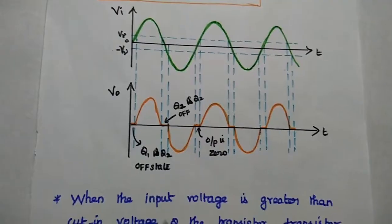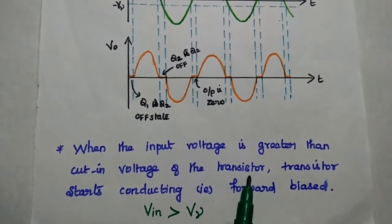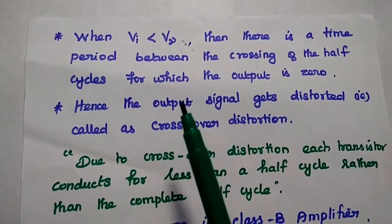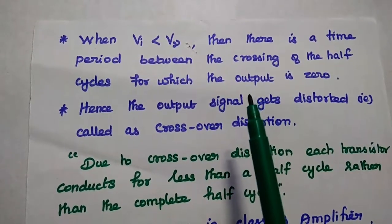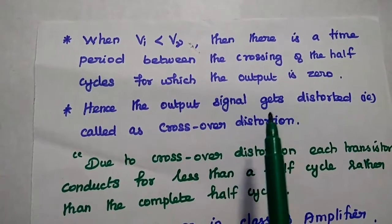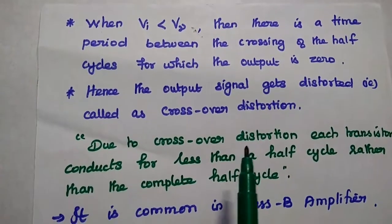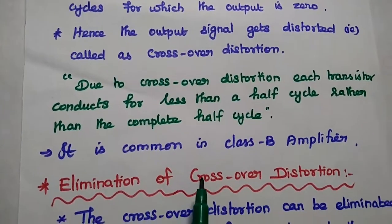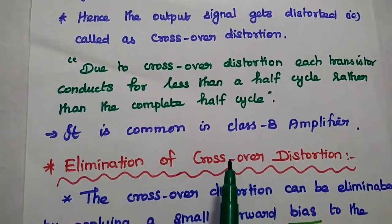This is the crossover distorted output. When the input voltage is greater than the cut-in voltage of the transistor, it starts conducting. Whenever the input voltage is less than the cut-in voltage, there is a time period between the crossing of the half cycles of the input signal for which the output is zero. We get a crossover distorted output signal. Due to this crossover distortion, each transistor conducts for less than half cycle rather than 360 degrees.